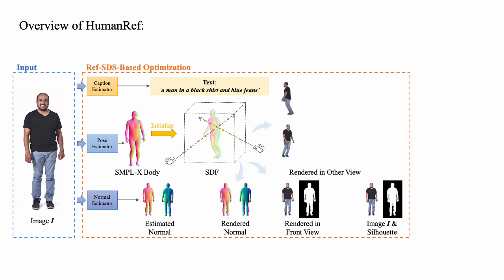In the front view, we employ the input image and its silhouette to construct a reconstruction loss to ensure appearance consistency between the generated 3D human and input image.